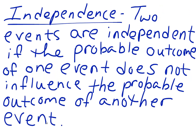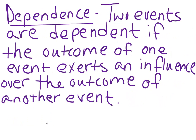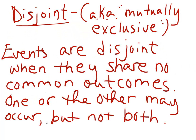Independence – two events are independent if the probable outcome of one event does not influence the probable outcome of another event. Dependence – two events are dependent if the outcome of one event exerts an influence over the outcome of another event. Disjoint – also known as mutually exclusive. Events are disjoint when they share no common outcomes; one or the other may occur, but not both.